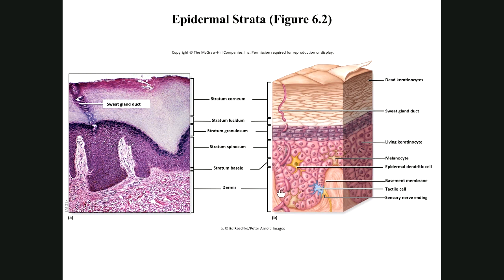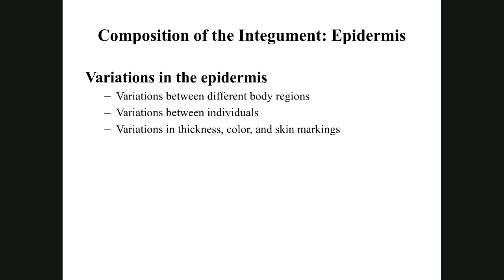To summarize the layers: stratum basale or germinativum, then stratum spinosum, then granulosum, then lucidum — which, if present, indicates thick skin — and finally the corneum.